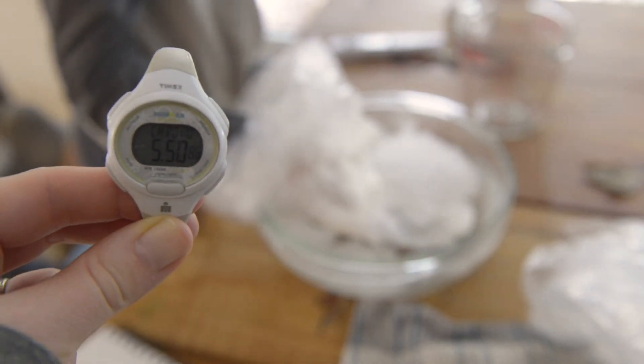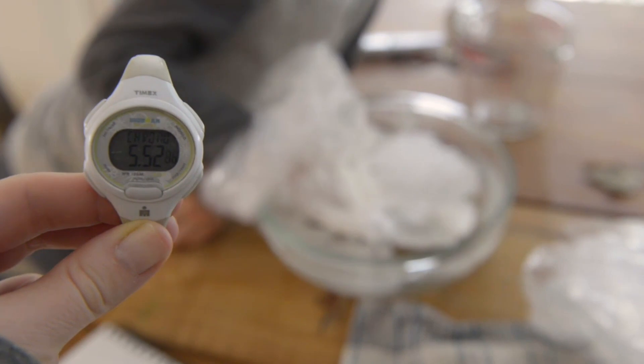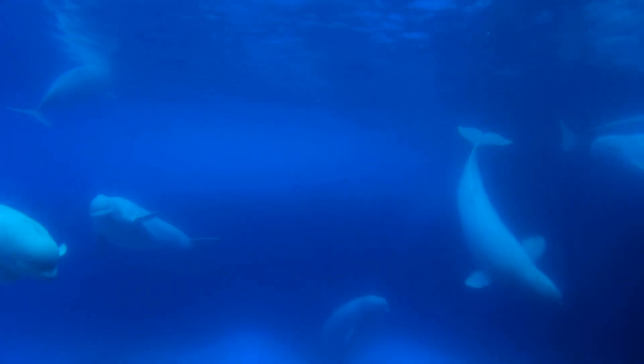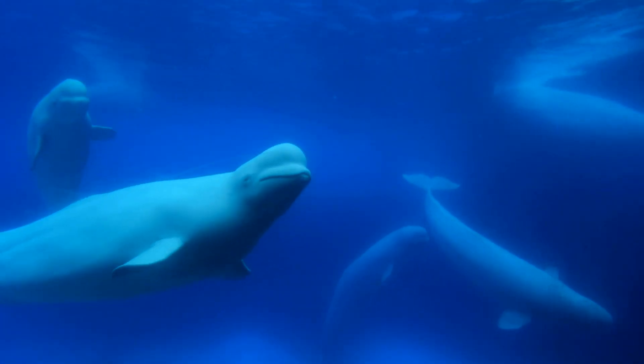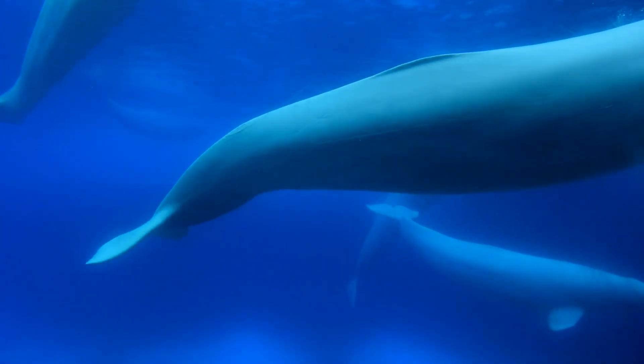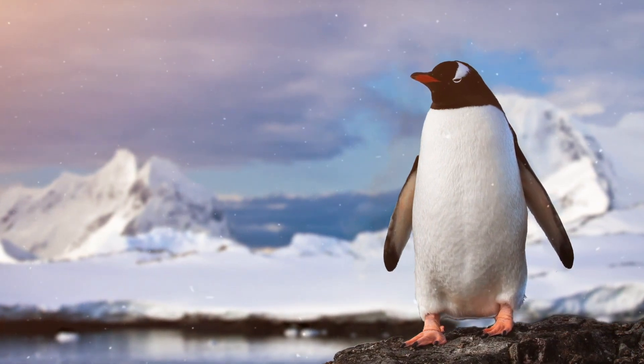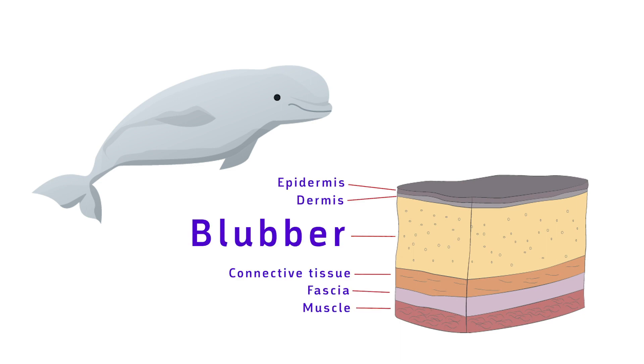Were you able to keep your hand in the snow longer using the control glove or the test glove? Although whales migrate between warmer and cooler waters, other animals like seals, sea lions, penguins and polar bears spend their entire lives in bitterly cold temperatures. These animals have a thick layer of fat under their skin called blubber.